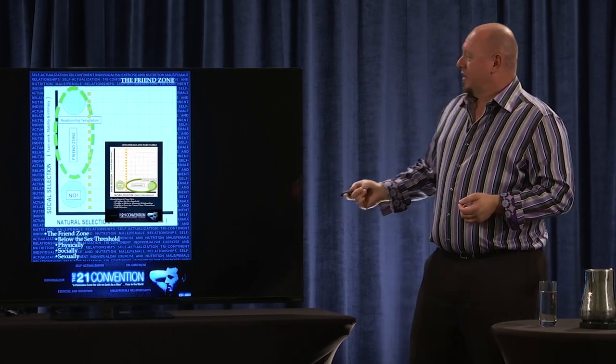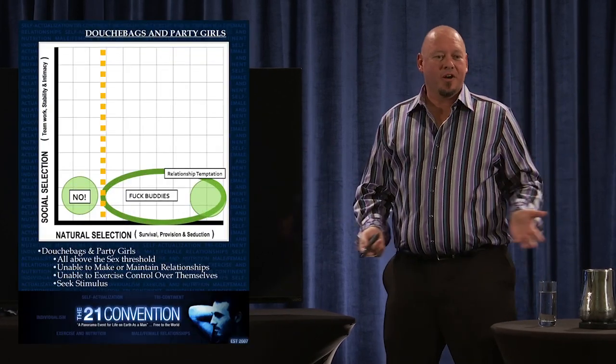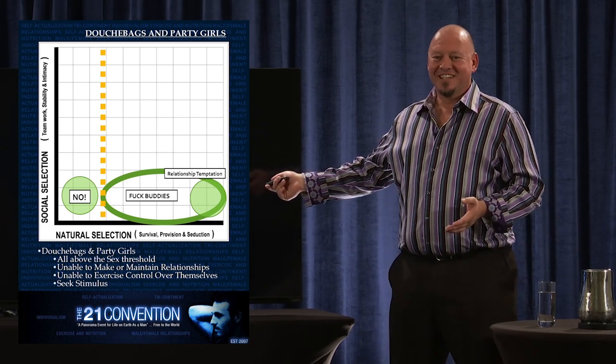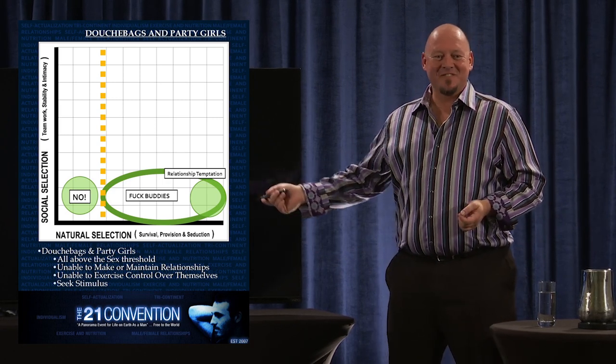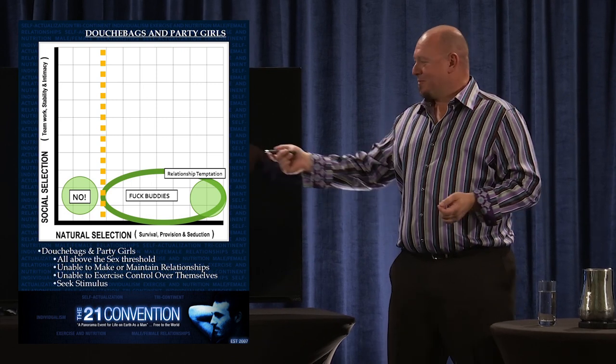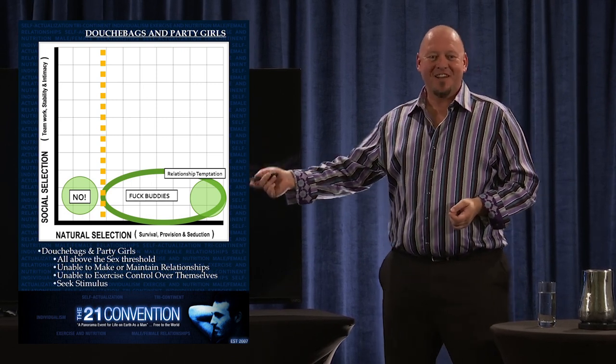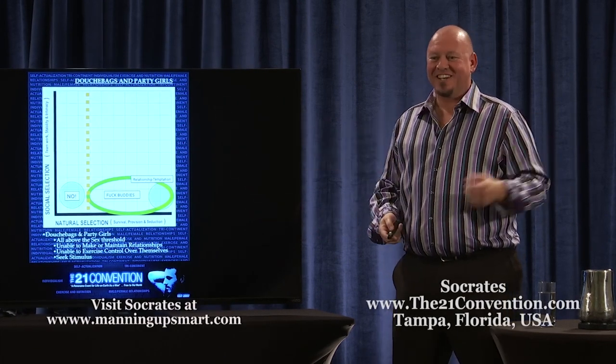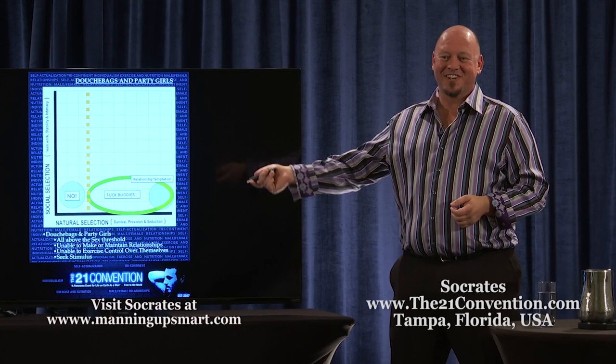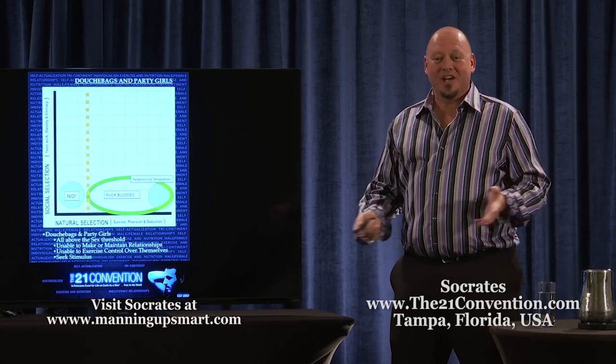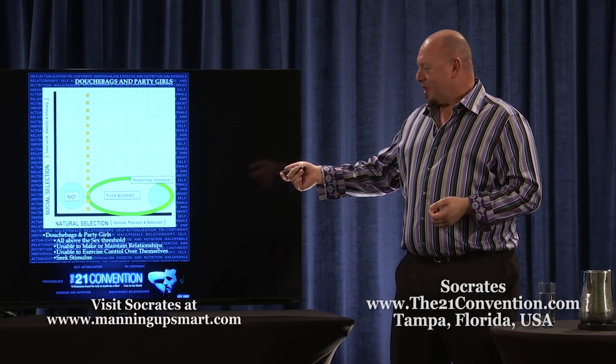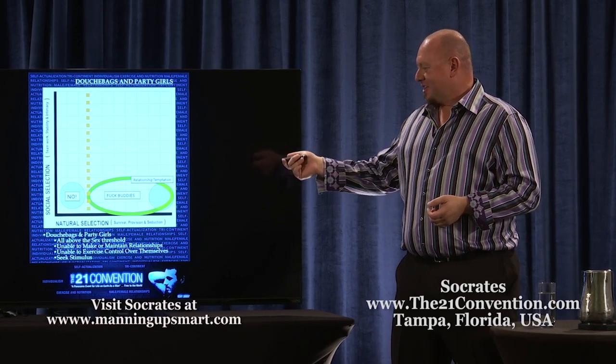Let's go to my next favorite one: douchebags and party girls. This is the opposite end of it. The difference is these people are getting laid. These people are having sex, they're having sex for a reason. Just like the people over in their friend zone were not getting laid for a reason, these people are getting laid for a reason. I'm not saying that's the ultimate objective, but there's a tremendous amount of validation that comes with that. They're all above the sexual threshold.